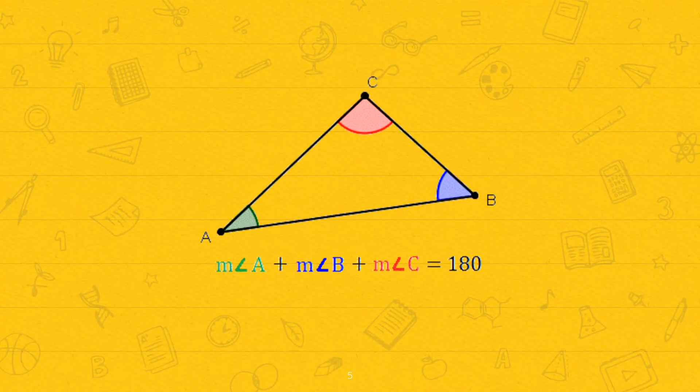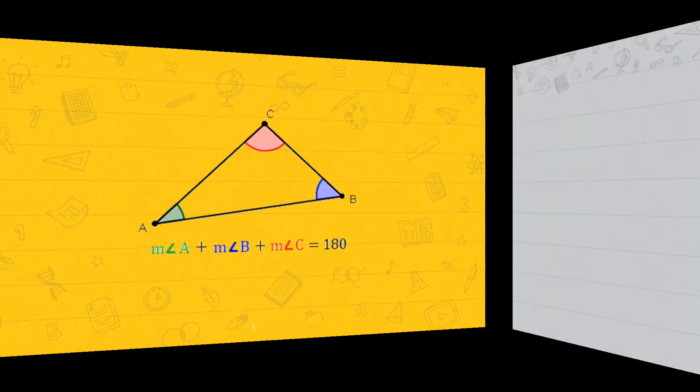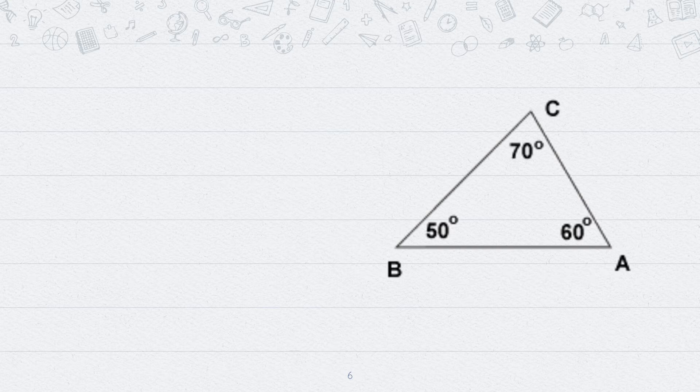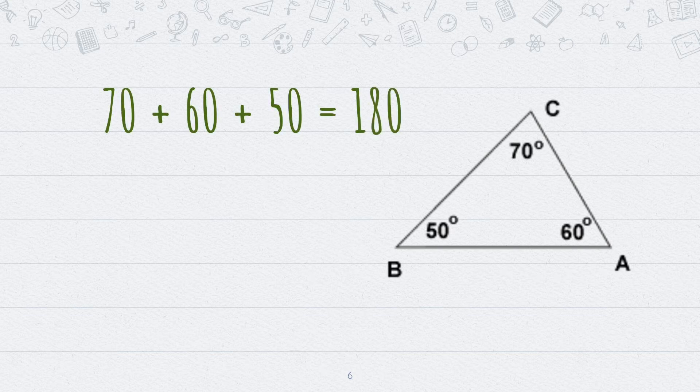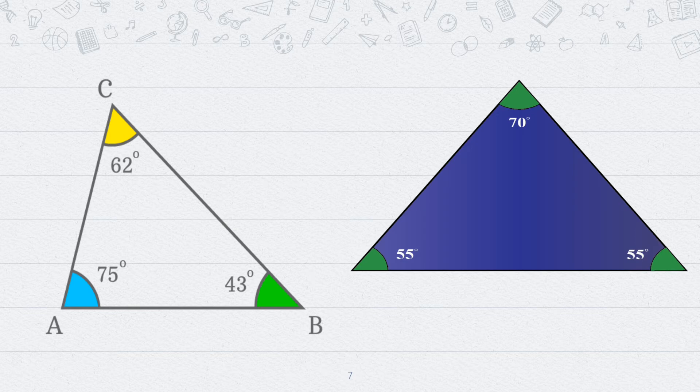If you add up the measurement of these angles, the answer will always be 180 degrees. Let's check. This is a triangle. Angle A is equal to 60 degrees. Angle B is 50. And angle C is 70. Let's add them up. 70 plus 60 plus 50. The answer is 180 degrees. Now we have two more triangles here. Pause the video here and add up the angles to check whether they come to 180 degrees or not.